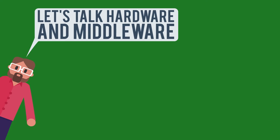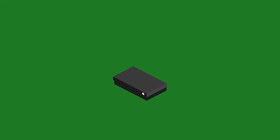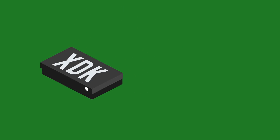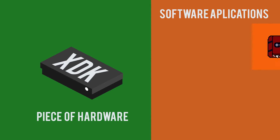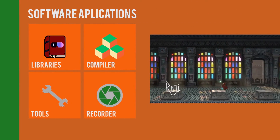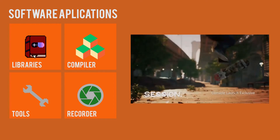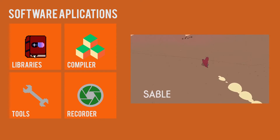Now let's talk hardware and middleware for your Xbox game development. To develop for Xbox, you will typically need to secure an Xbox Development Kit. The Xbox Development Kit, or XDK, is a piece of hardware bundled with various software applications used to make games for Xbox. It includes libraries, a compiler, and various tools to jumpstart your development. The XDK also includes a tool to record in-game footage, which has been widely used to create high-quality screenshots and trailers for marketing your title.